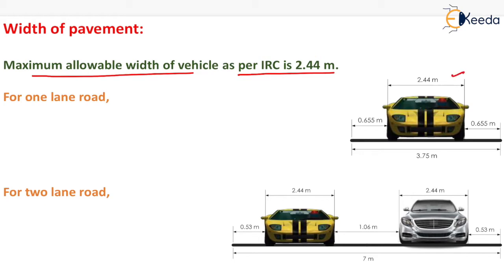For a one-lane road, we have to keep the width of the road as 3.75 meter because the overall width of vehicle is 2.44 meter and we have to keep the side clearance as 0.655 meter, which is shown here.